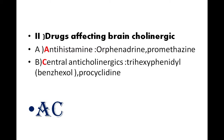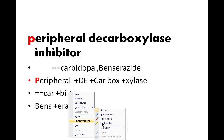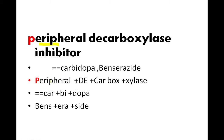Examples of central anticholinergics include trihexyphenidyl and procyclidine. So 'AC' means antihistamine and central anticholinergic. Now let's simplify further: peripheral decarboxylase inhibitors — examples are carbidopa and benserazide. Break the word as 'peripheral', then 'D' for decarboxylase.